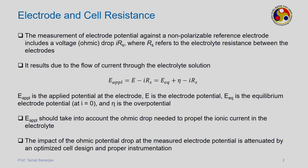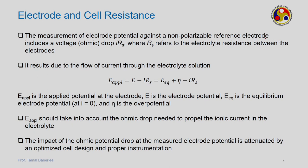Let us see how these different resistances build up when we derive equations for cell potential or electro-resistance. The current lecture focuses on electrode potential, kinetics, and mass transfer resistance. The measurement of the electrode potential against a non-polarizable reference electrode includes a voltage ohmic drop, IRS. This IRS represents resistance as ions move from solution to electrode or electrode to solution, and that resistance multiplied by current gives the total voltage drop IRS.